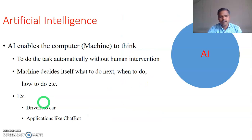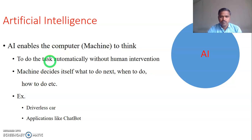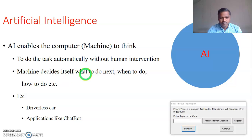Artificial intelligence means that machines will think like human intelligence — that's why it is called artificial intelligence. Artificial intelligence enables the computer to think and do tasks automatically without any human intervention. When doing tasks automatically, the machine itself has to decide what task to do next, when the task is to be done, and how it will be done. Humans should not intervene in that process.